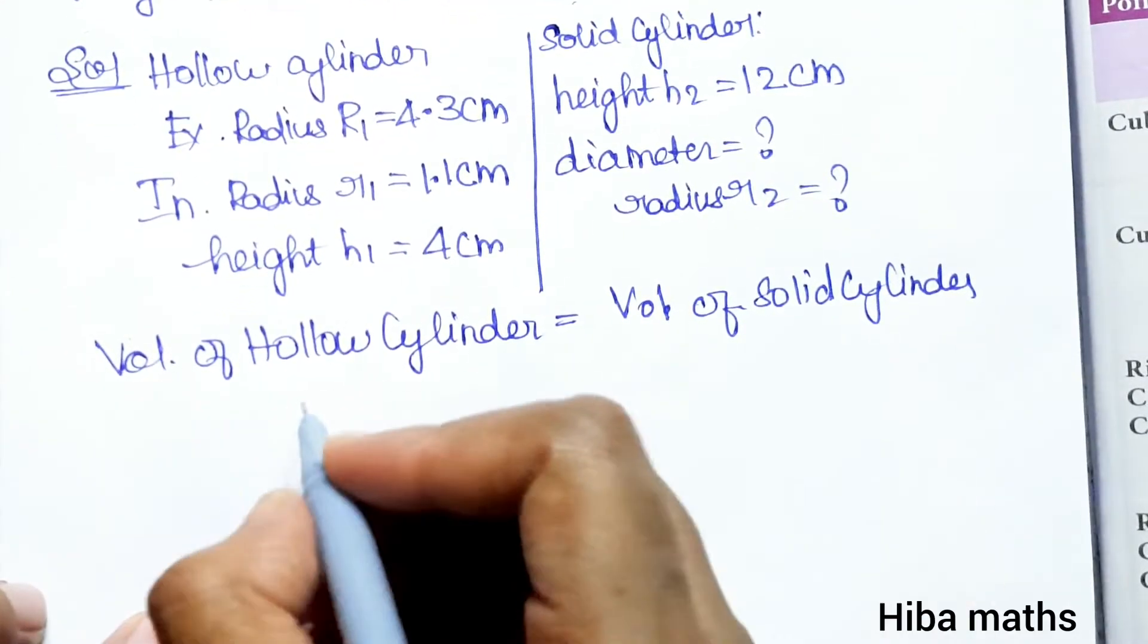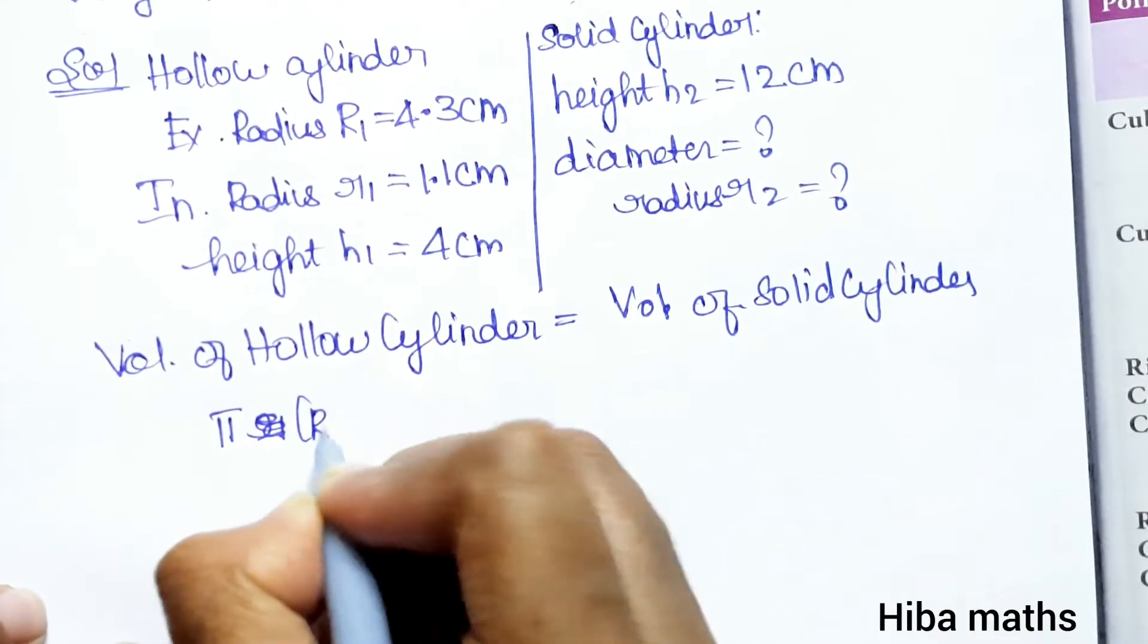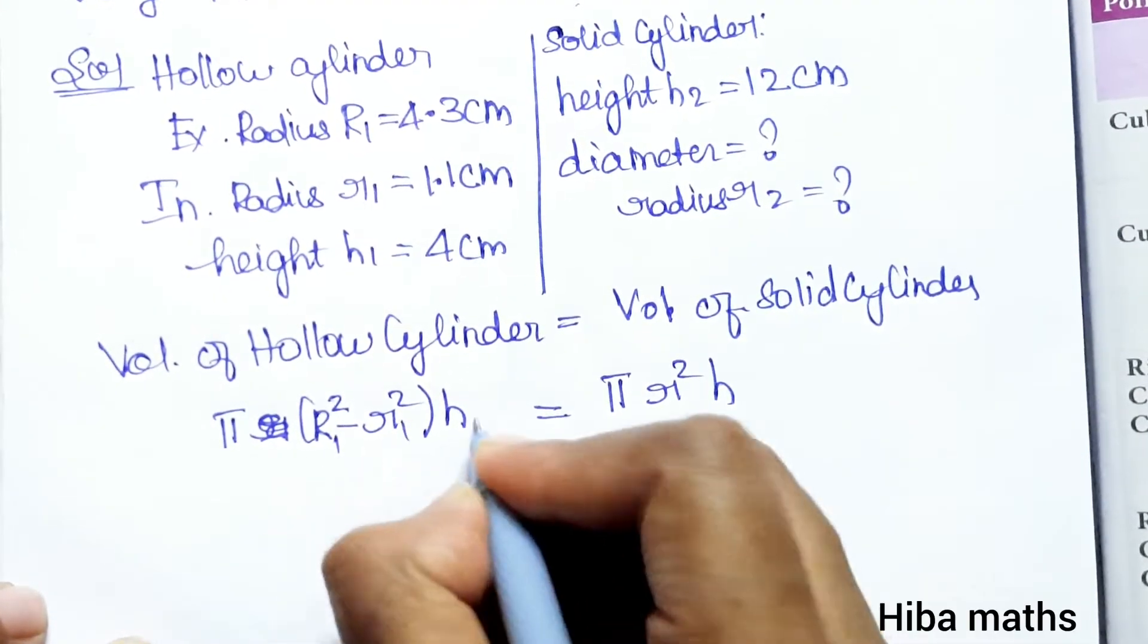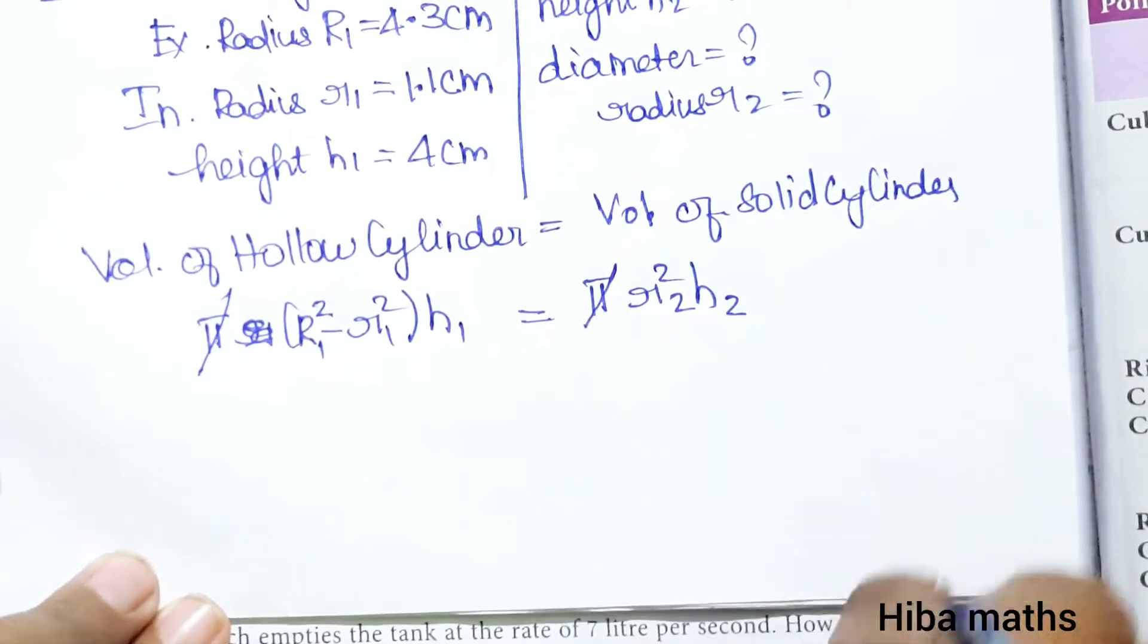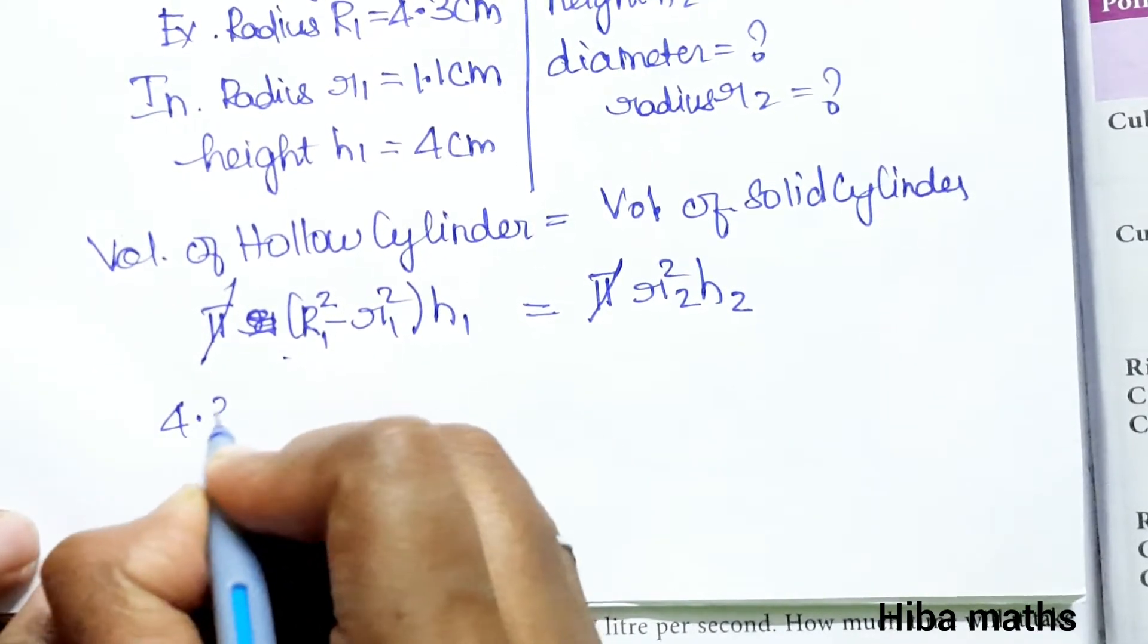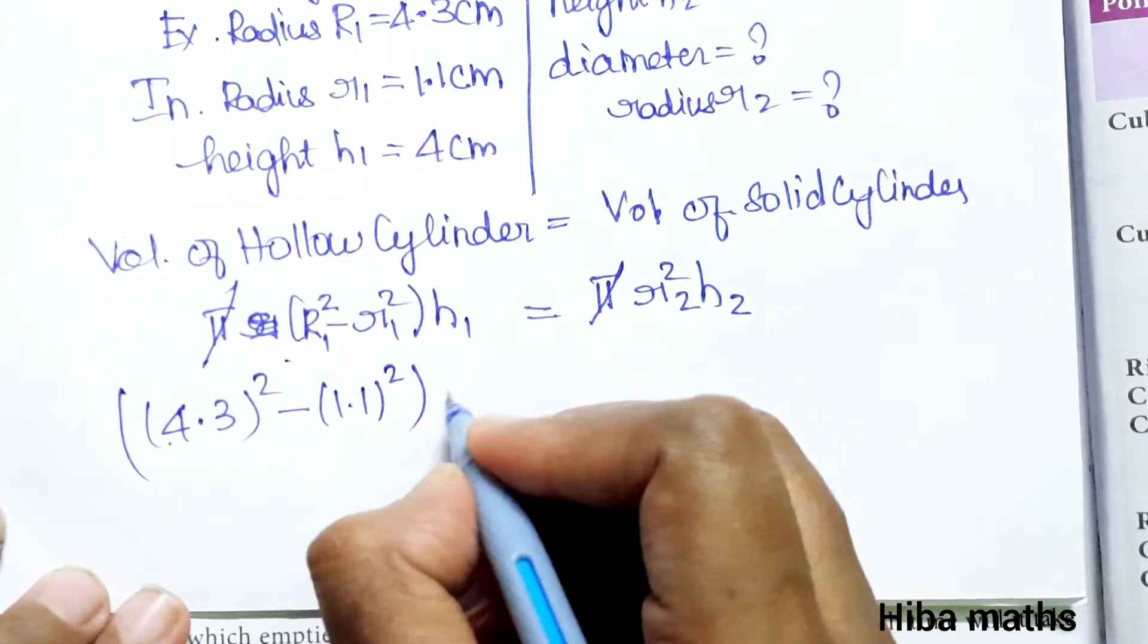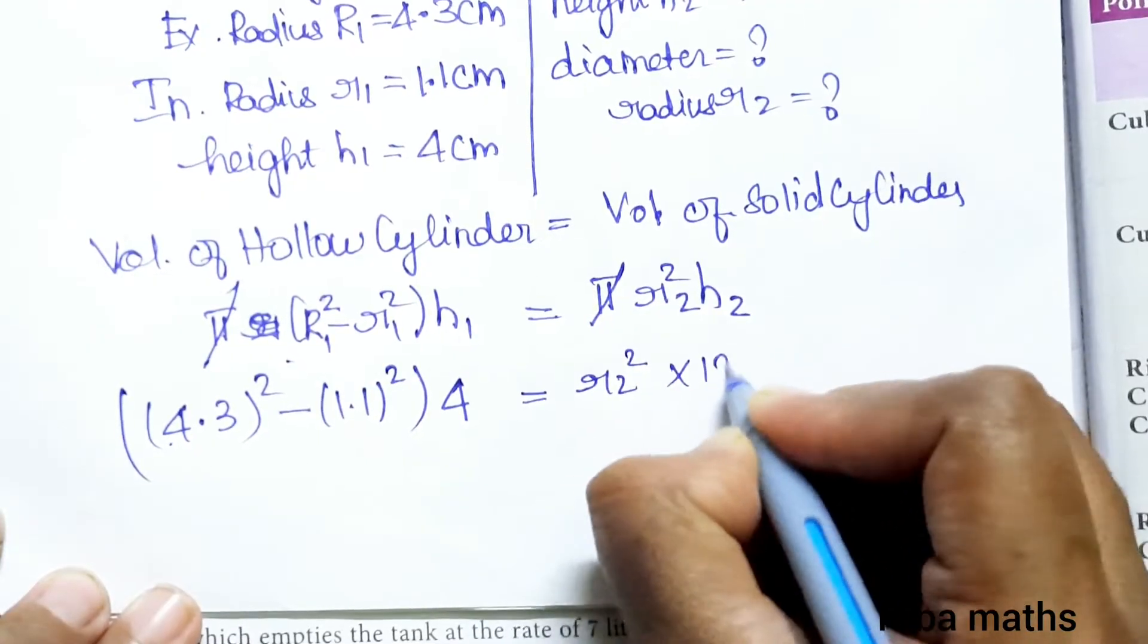So volume of hollow cylinder: π(R² - r²)h equals π r² h. It is R1, r1, h1 for the first, and r2, h2 for the second. Pi cancels. R1 value is 4.3 squared minus 1.1 squared, times h1 equals r2 squared times H2 value 12.